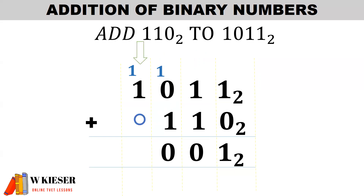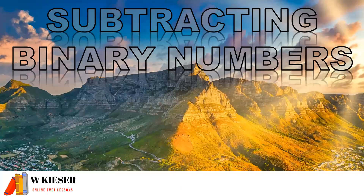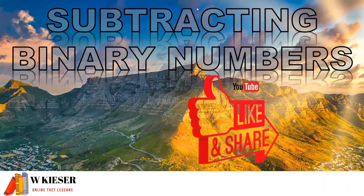In the fourth column from the right, we have 1 plus 1 plus an imaginary 0, which equals 0 carry 1. In the final column, we have an imaginary 0 in each of those positions, so according to the law 1 plus 0 equals 1, giving us our final answer. Thanks for watching this video — if you appreciated it, you can hit the like button.